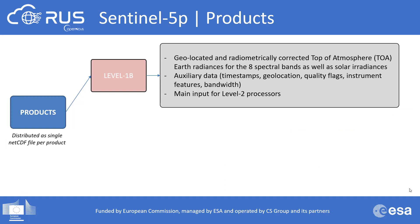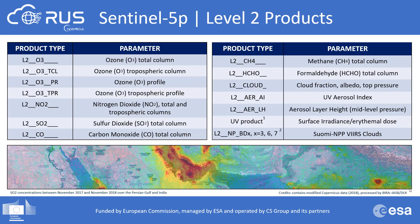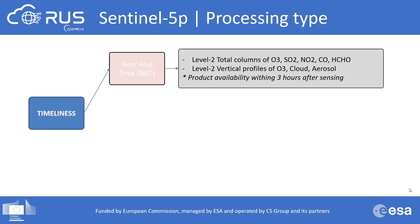Data products from Sentinel-5P's TROPOMI instrument are distributed at two levels. Level 1B provides geolocated and radiometrically corrected top-of-atmosphere Earth radiance in all spectral bands, as well as solar irradiance, and is the main input for Level 2 products. Level 2 provides atmospheric geophysical parameters and is the product type most regular users will be interested in — and the one used in this webinar. The full list of Level 2 products includes ozone, nitrogen dioxide, sulfur dioxide, and other trace gases.